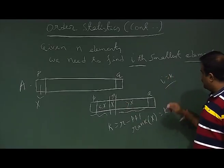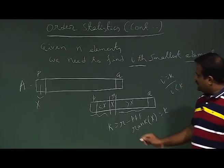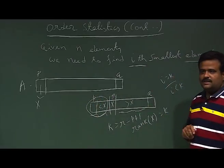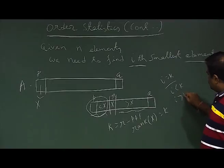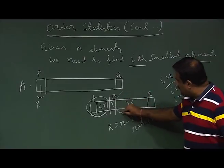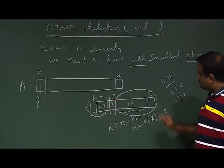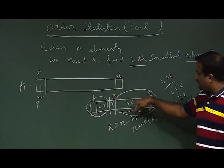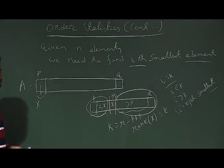Now if i equals k, we have found our i-th smallest element. Otherwise, if i is less than k, we know the i-th smallest element is in the left subarray, so we call the same function recursively on that subarray. If i is greater than k, the i-th smallest element is in the right subarray, but we already passed k elements, so we look for the (i minus k)-th smallest element there. This is our select algorithm.